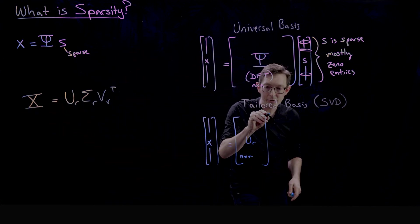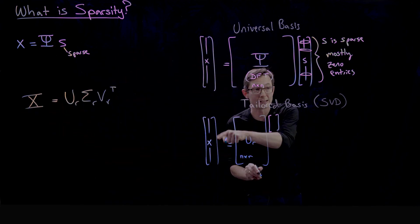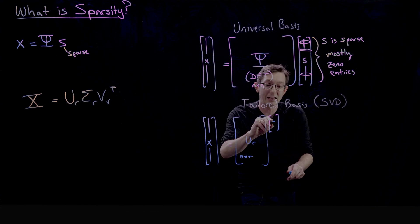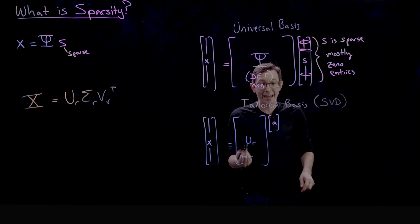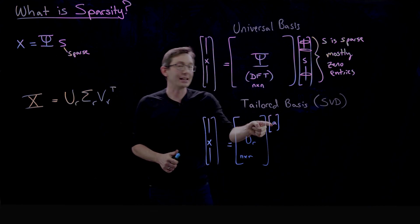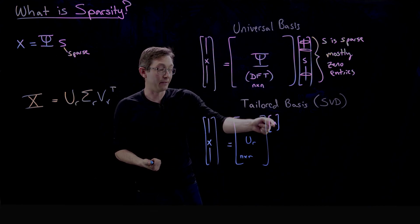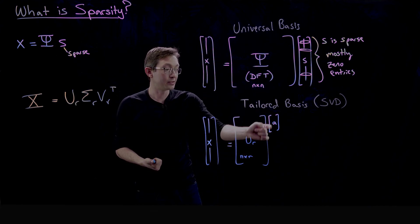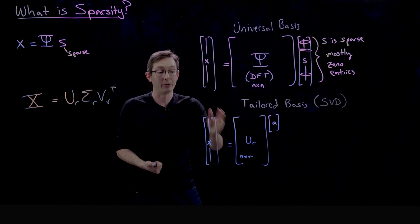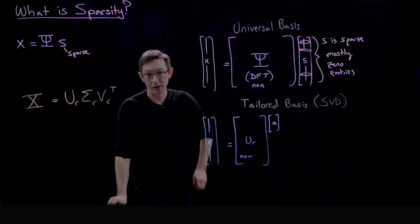And so in this representation I can still compress X, I can still write X in terms of many fewer numbers in this a vector. But this a is not sparse anymore; a is just a few numbers—it's R numbers that tell me what combination of this library I need to add up to get X.